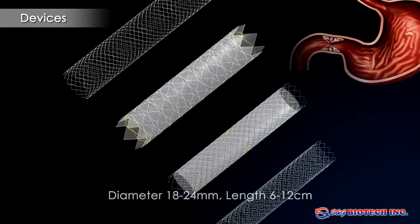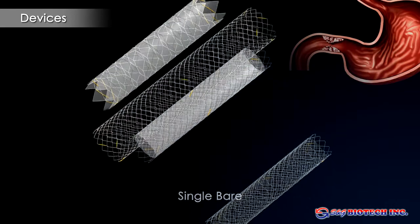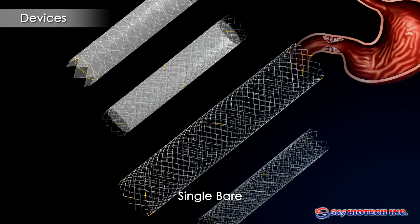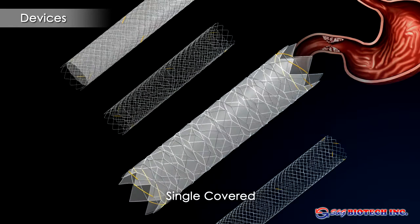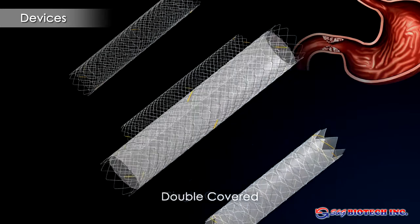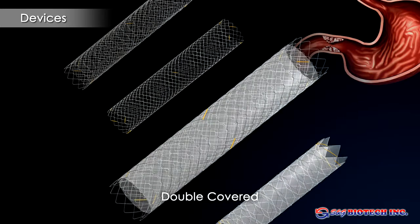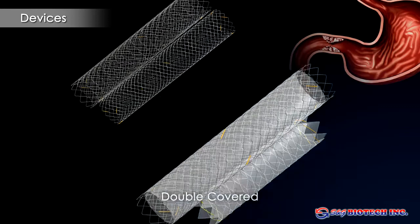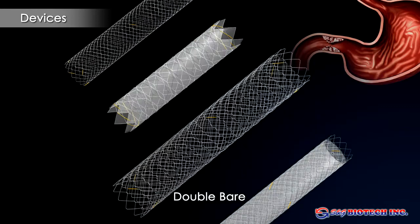There are four types of Aegis pyloric stents. The most popular is the double bear Aegis due to its excellent conformability and resistance to migration. If a covered stent is used, the possible future need for ERCP and access to the papilla needs to be considered.